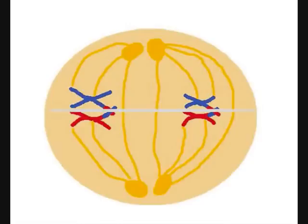Next, the tetrads line up on the metaphase plate, which is equidistant from the two pairs of centrioles. The spindle fiber is completely formed and is attached to either side of the tetrads.